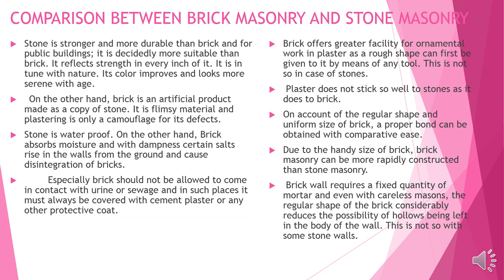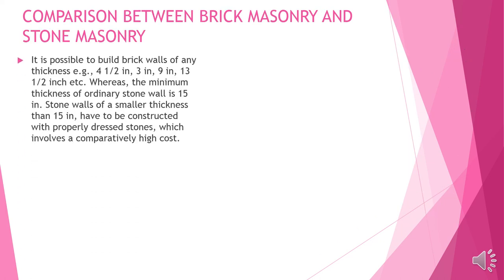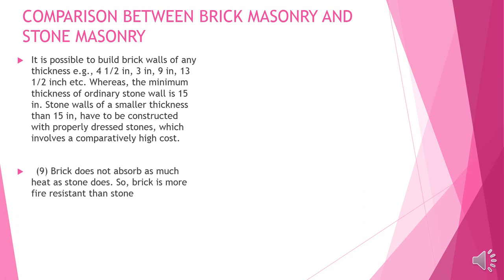Brick wall requires a fixed quantity of mortar, and even with careless masonry the regular shape of bricks reduces the possibility of hollows being left in the wall body — not the same with stone walls. It is possible to build brick walls of any thickness: 4.5, 3, 9, or 13.5 inches, etc., whereas the minimum thickness of an ordinary stone wall is 15 inches. Stone walls thinner than 15 inches require properly dressed stones, involving comparatively high cost. Brick does not absorb as much heat as stone, so brick is more fire resistant than stone.